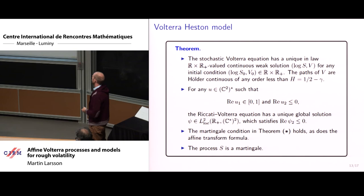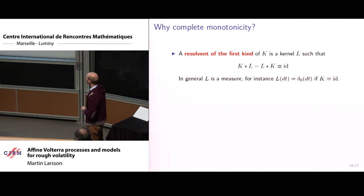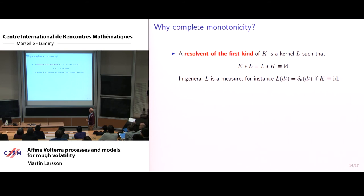So we get what we want, and we have similar results also for the square root case and the Ornstein-Uhlenbeck case. So now the last two minutes, I will say something about why we need this assumption of complete monotonicity. And this is related to what's called a resolvent of the first kind. So that is another kernel L such that when you convolve it with K, you get a constant function, and this constant function is equal to the identity matrix. So this kernel L could be a measure. If K is one, then L will just be Dirac mass at zero. If K is a fractional kernel, then L is another fractional kernel, which is precisely the one that appears in the Riemann-Liouville fractional derivative. So that's what's known as a resolvent of the first kind.